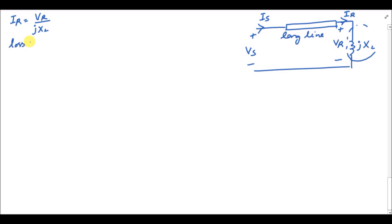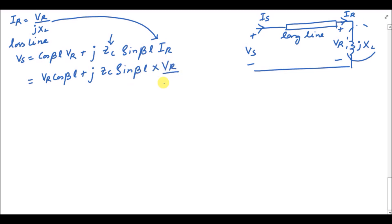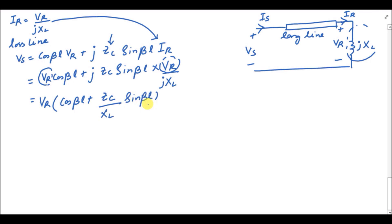From the formulas of the long lossless transmission line, the sending-end voltage is equal to cos(βl)·Vr plus Zc·sin(βl)·Ir, where Zc is the surge impedance. Using the Ir formula in this equation, we get: Vs = Vr·cos(βl) + jZc·sin(βl)·(Vr / jXL). Taking Vr common, you get Vs = Vr·[cos(βl) + (Zc / XL)·sin(βl)].